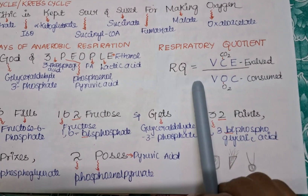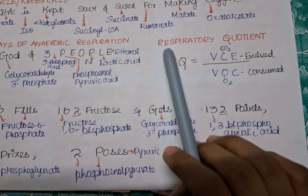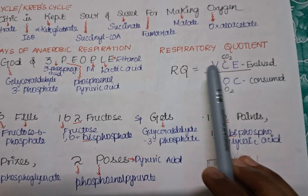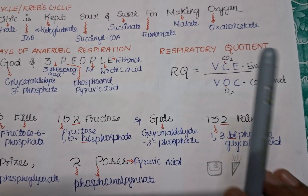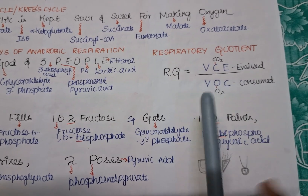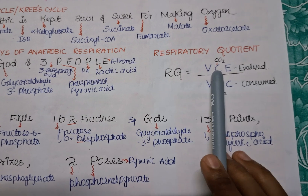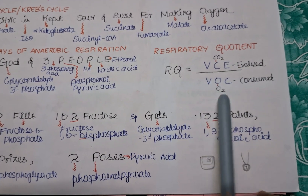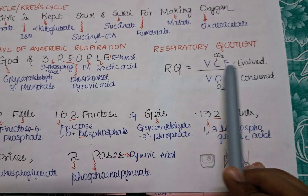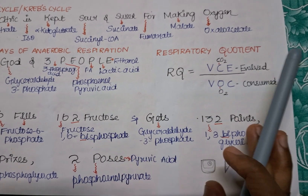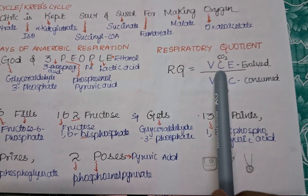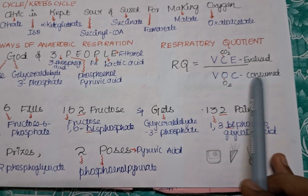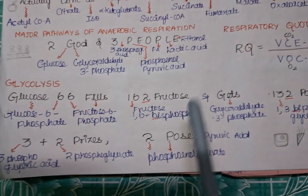The next trick is for Respiratory Quotient, or RQ. Just remember these three words: VCE and VOC — VCE VOC. In VCE: C stands for CO2, E stands for 'evolved.' In VOC: O stands for O2, C stands for 'consumed.' Expanding the formula: RQ equals Volume of CO2 Evolved (VCE) divided by Volume of O2 Consumed (VOC). That's it!